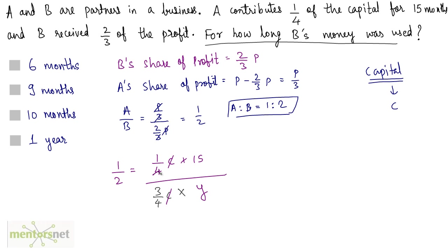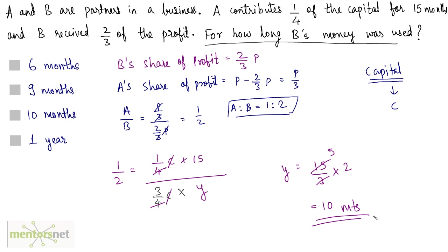C and C get cancelled out, and 4 and 4 get cancelled out. We can write Y is equal to 15 by 3 times 2 — that is 15 by 6 — so 3 times 5 is 15, and 5 times 2 is 10. So 10 months is the time period for which B's money was used. Option C is the correct answer.